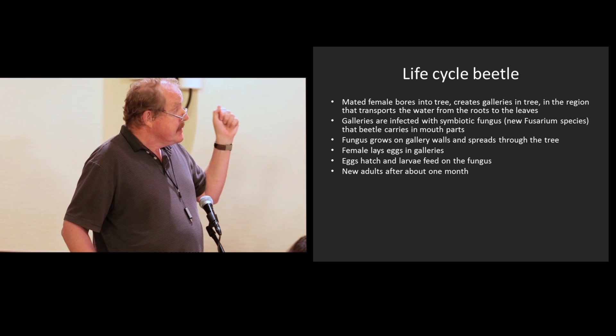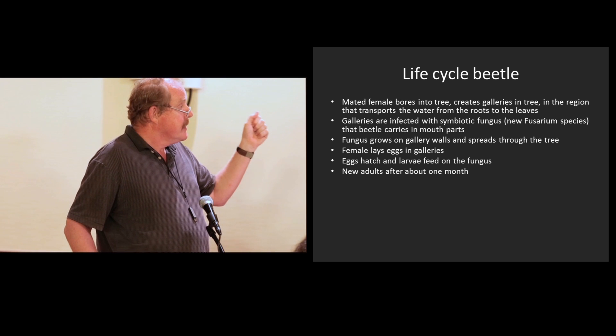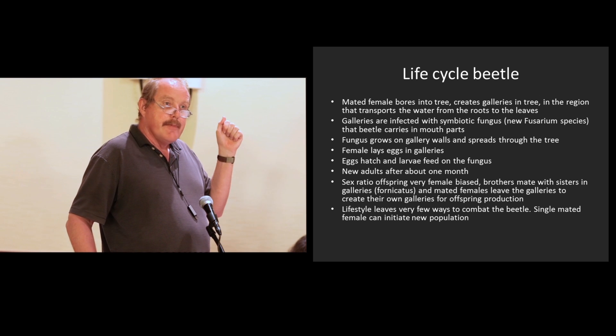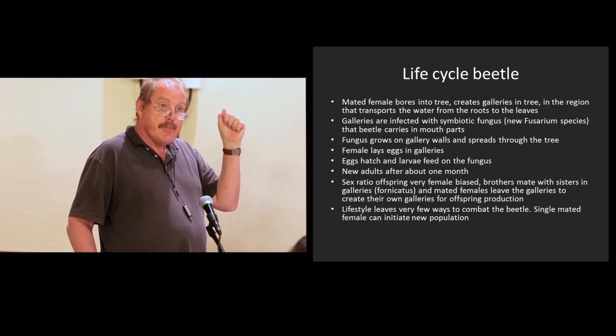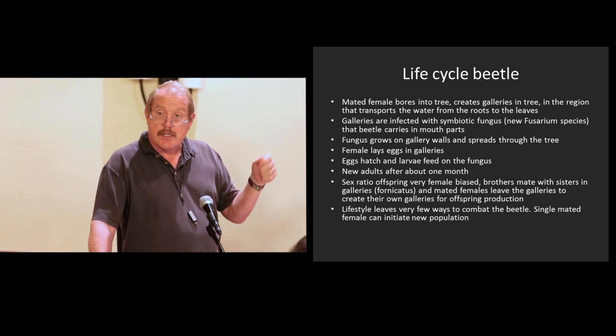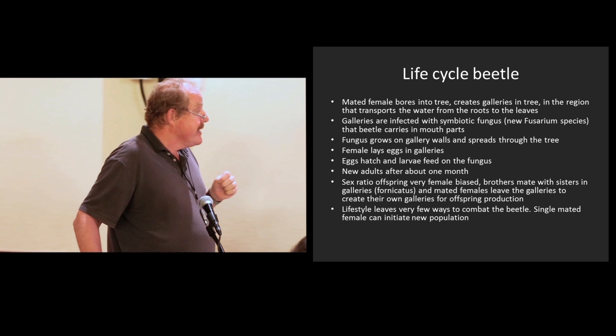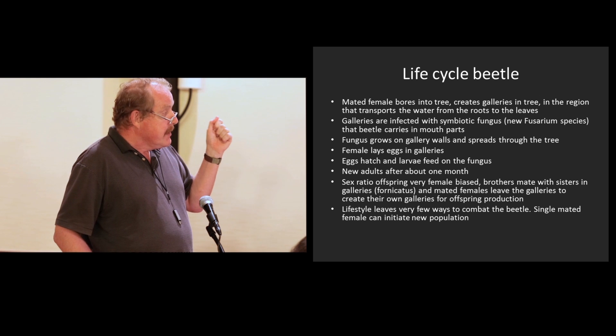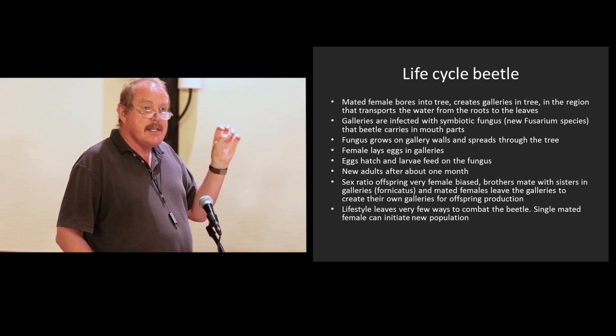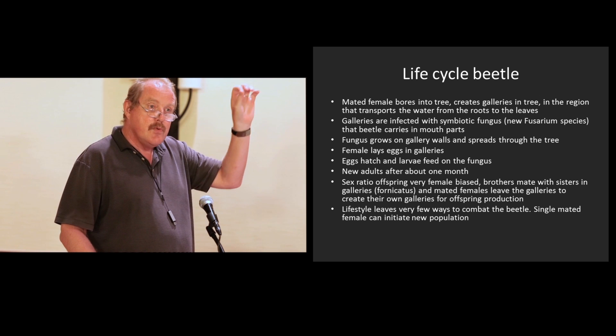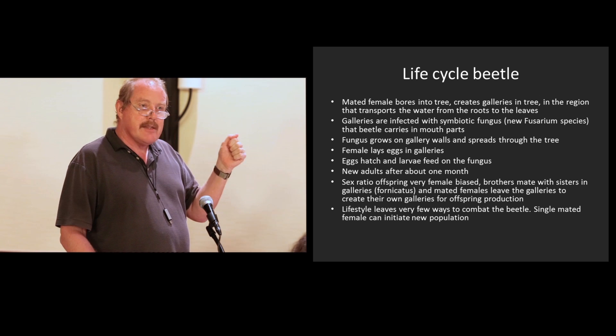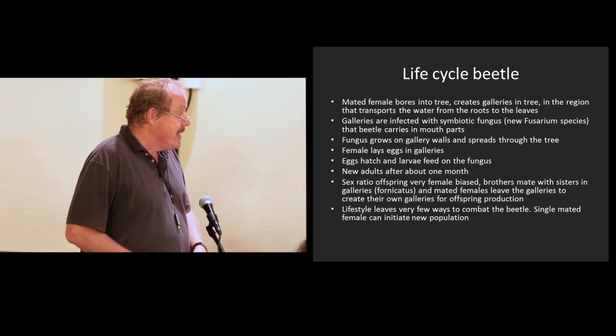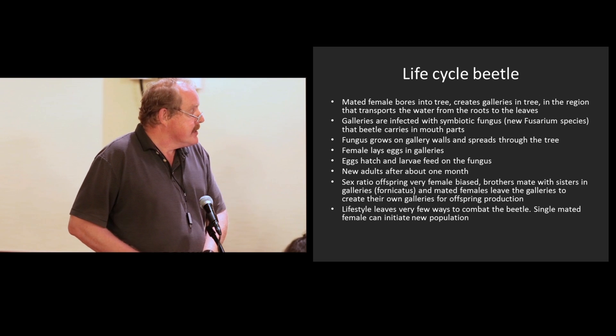The female lays her eggs in these galleries. The eggs hatch and the larvae feed on the fungus. New adults emerge about one month later. The sex ratio of the offspring is very female biased. Mom produces mainly daughters and a couple of sons. And the fornication takes place inside the galleries where the brothers mate with their sisters. This lifestyle of mating inside, coming out as a mated female, infesting new trees leaves very few ways to combat the beetle. It's out for a very short time and then it goes into the tree. So this is a real problem with this thing.